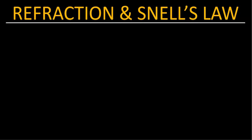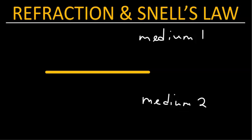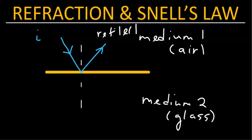Let's first look at the process of refraction of light. Assume that you have a boundary separating two different mediums. This is medium 1, and below the boundary is medium 2. For example, this could be air, and this could be glass. When you have a beam of light hitting that boundary, this incident beam would split into two. One beam would go like that — that is the reflected beam, or the reflected ray.